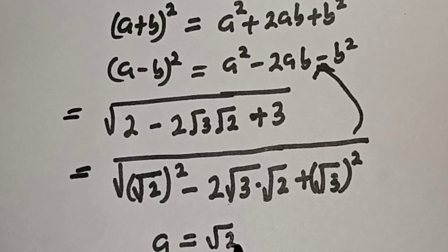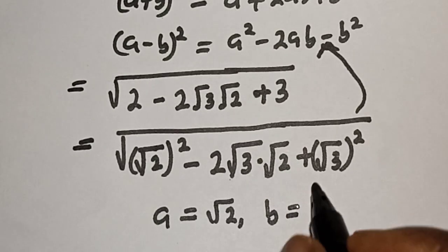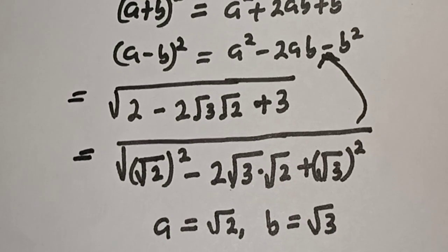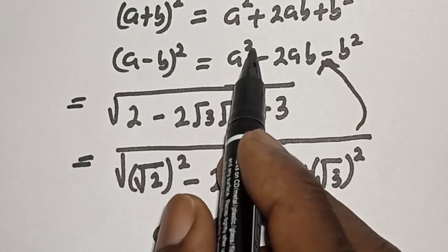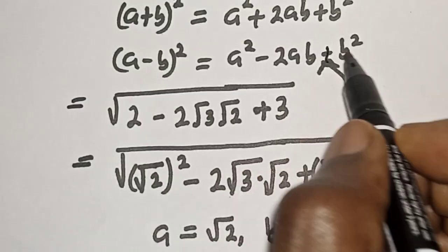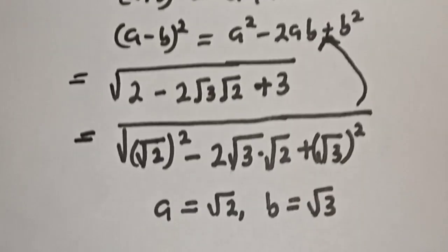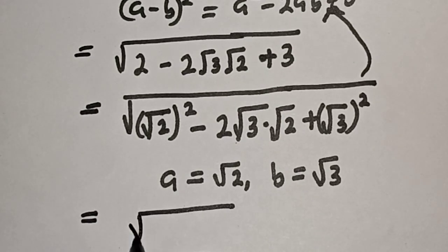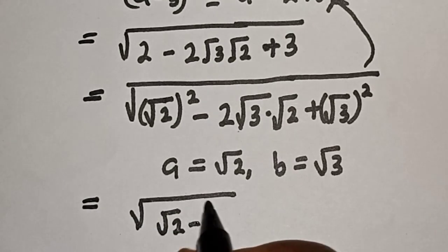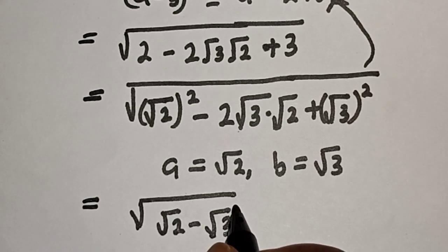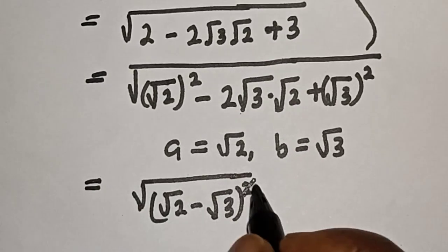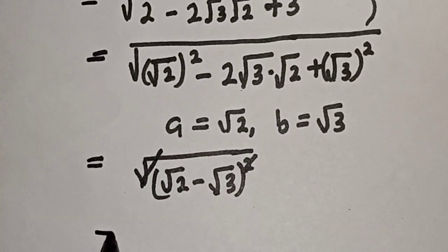From this, we identify a equals root 2 and b equals root 3, noting that 3 minus 1. Since (a − b)² is equal to a² minus 2ab plus b², this is equal to square root of (root 2 minus root 3) all squared. Then the square root and the square cancel each other.